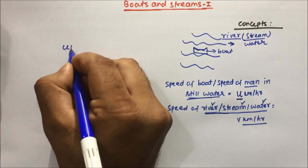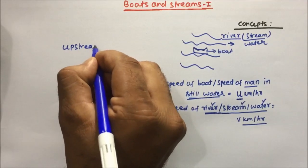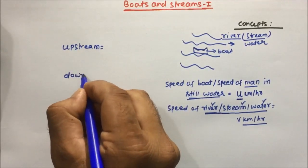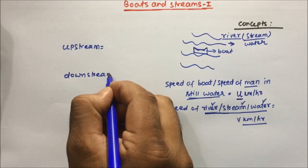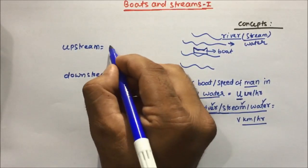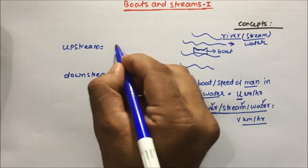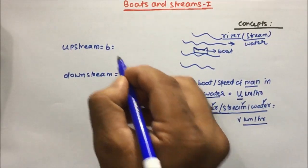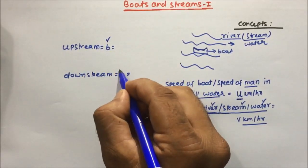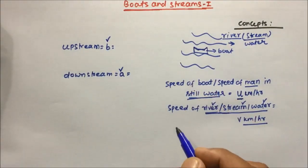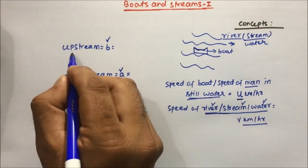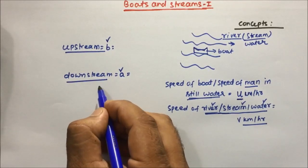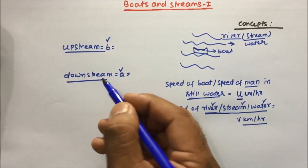And then there will be Upstream and Downstream. Upstream will be denoted as B and Downstream will be denoted as A — this is a standard notation we will use across Boats and Streams. Many students get confused about upstream and downstream, so let us understand it properly.